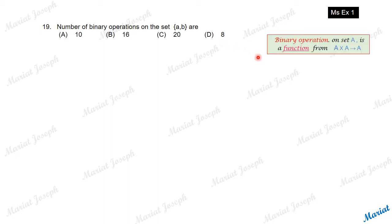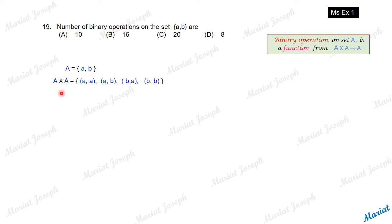As we know, a binary operation on a set A is a function from A cross A to A. Here, set A given to us has two elements: set A is {A, B}. Then A cross A is the set of all ordered pairs that can be formed using these two elements. This is A cross A.